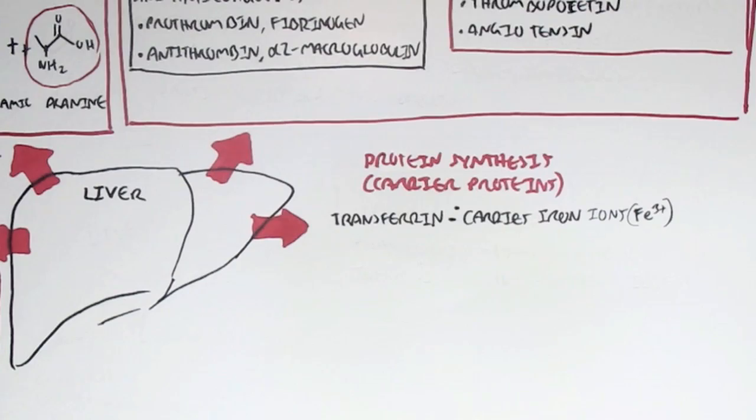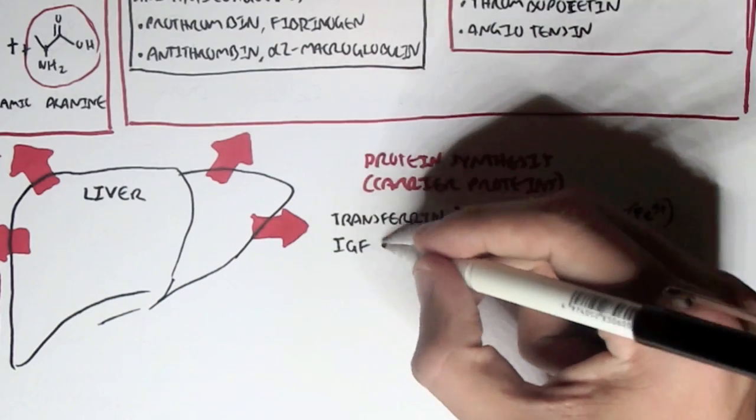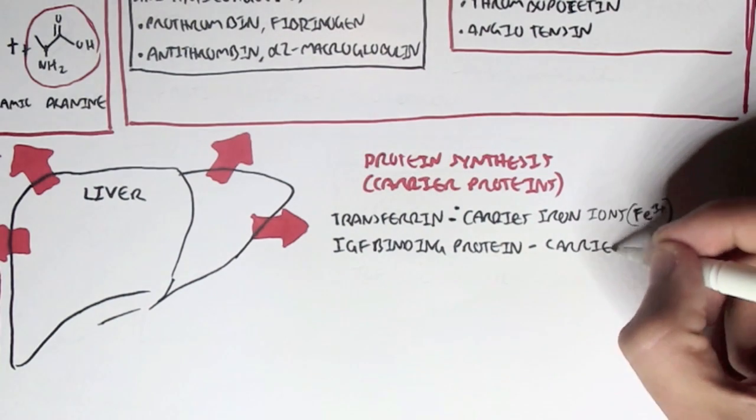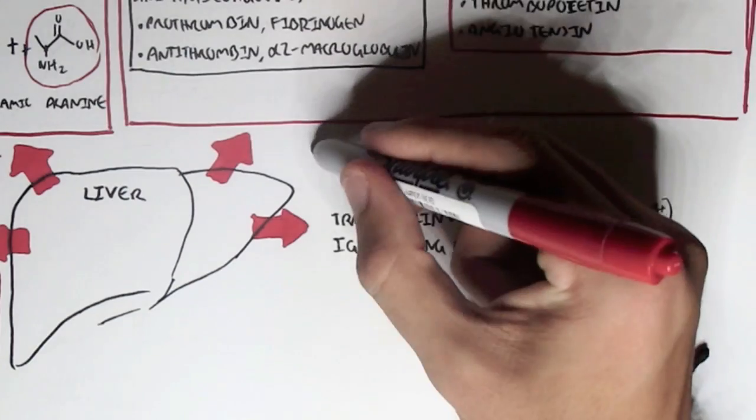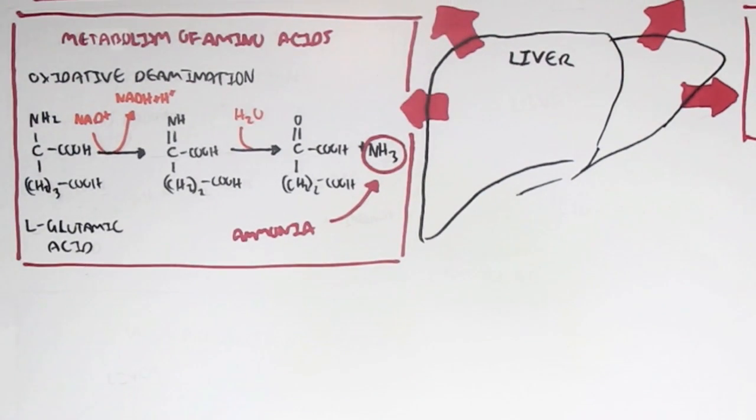Another carrier protein is IGF, insulin-like growth factor, binding protein. And this carries insulin-like growth factor 1, which, if you remember, is also produced by the liver. And if you remember, insulin-like growth factor 1 is important for growth and development.